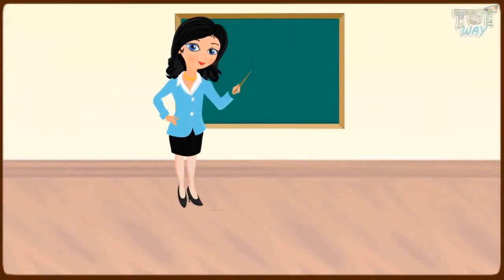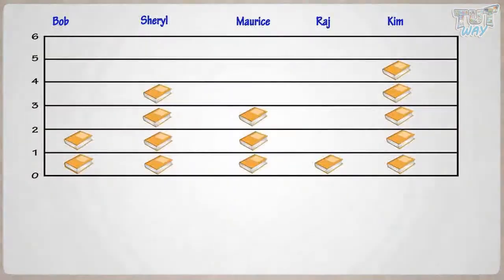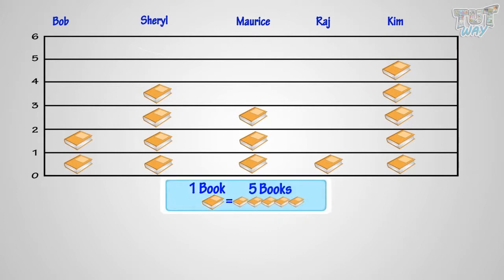Miss recorded the number of books read by students in her class and depicted it as a graph, where the symbol of one book represents five books. Now let's answer a few questions based on this graph.